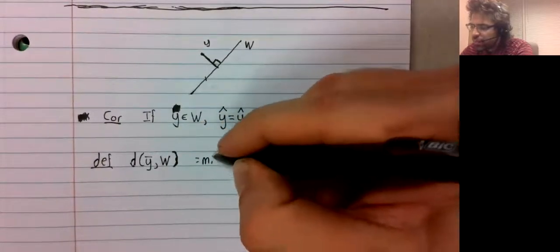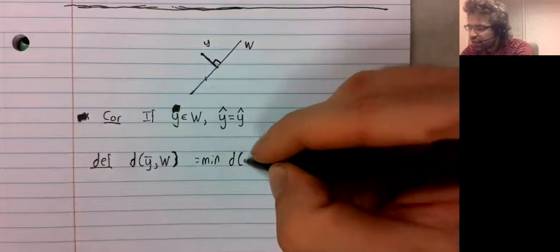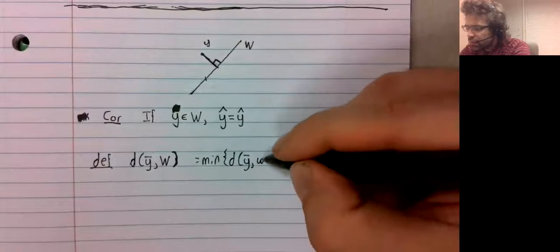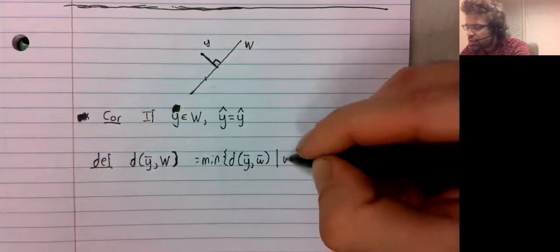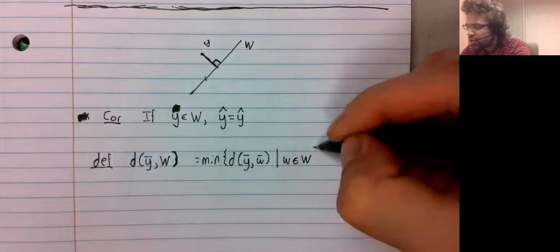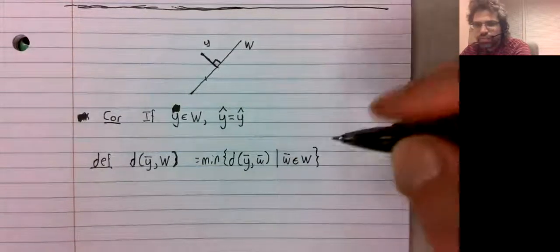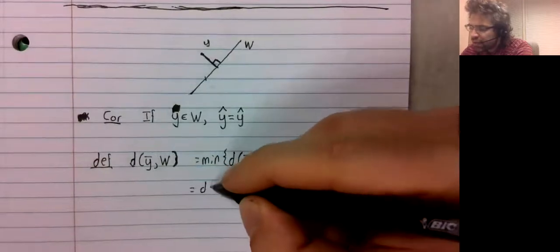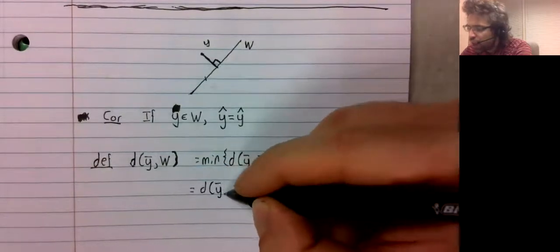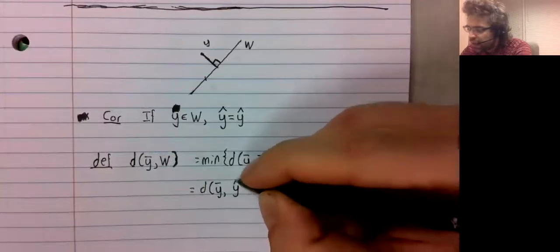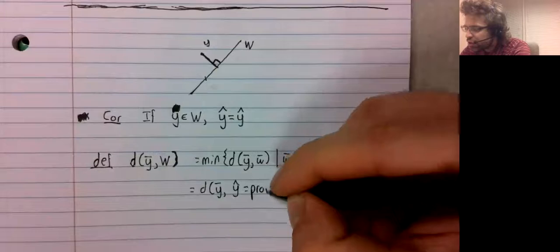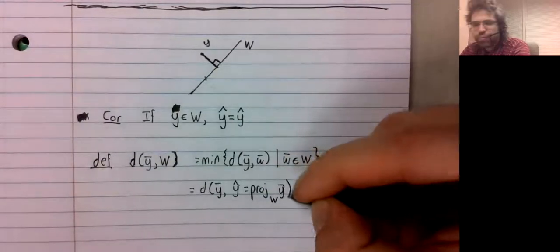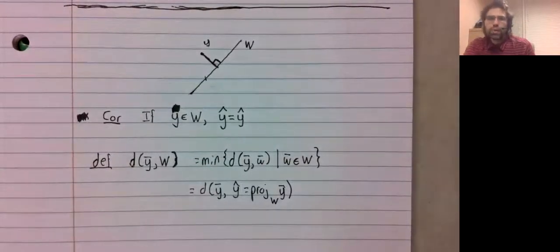Is the minimum of the distance between the vector and the vectors belonging to the subspace. According to what we have now, that's the distance between Y and Y hat, the projection of Y onto the subspace.